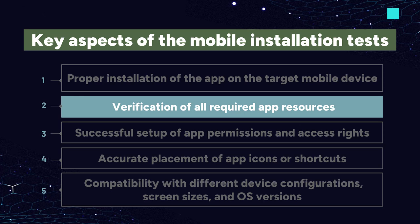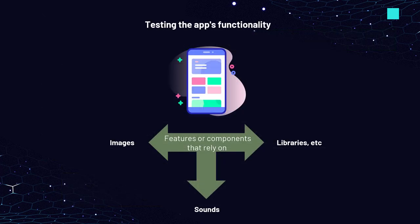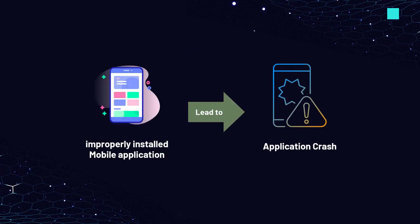The next key aspect to test during mobile installation is verification that all required app resources — for example, assets and libraries — are properly integrated. After installation is successful, you should begin by thoroughly testing the app's functionality, interacting with the app as a regular user and paying attention to any features or components that rely on specific resources such as images, sounds, or libraries. Typically, if the application is improperly installed — such as not all libraries were installed — it will crash after launch or after navigating to the section with the missing library.